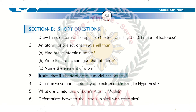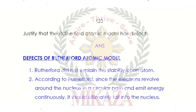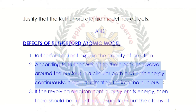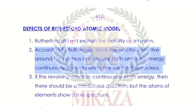Question No. 3: Justify that Rutherford's atomic model has defects. We have to prove that Rutherford's atomic model was rejected. First defect: Rutherford did not explain the stability of the atom. According to Rutherford, since electrons revolve around the nucleus in a circular path and emit energy continuously, they should ultimately fall into the nucleus. But electrons do not fall — they show stable behavior — so this model was rejected.